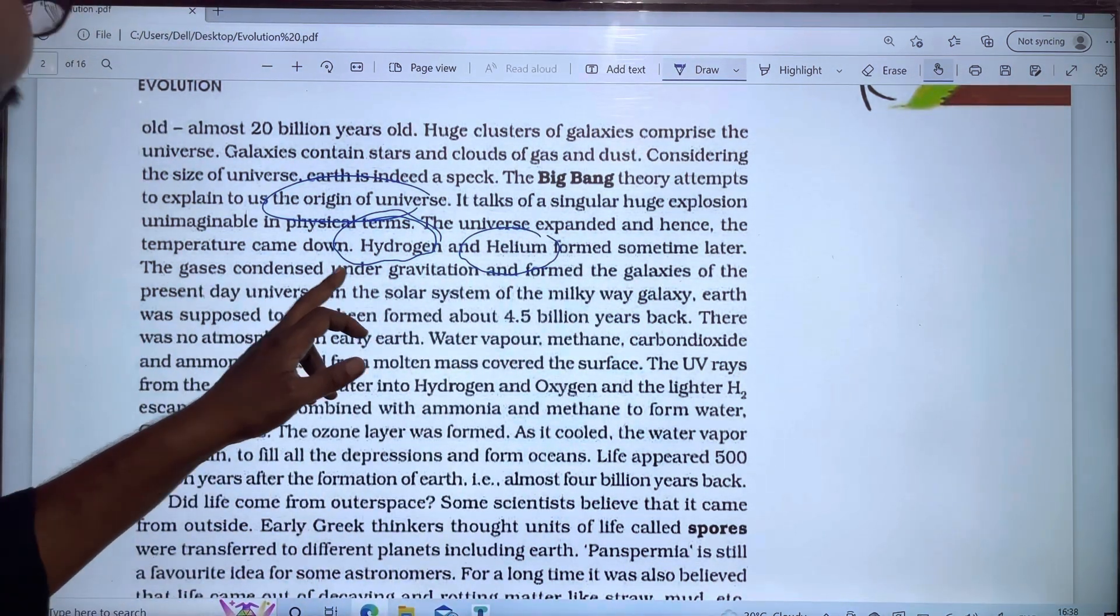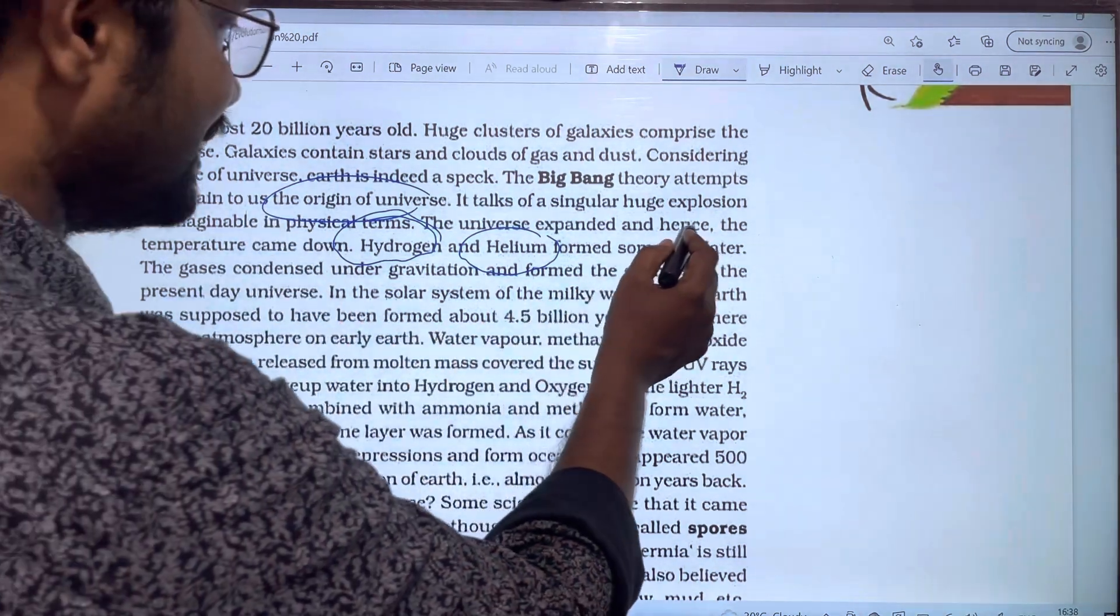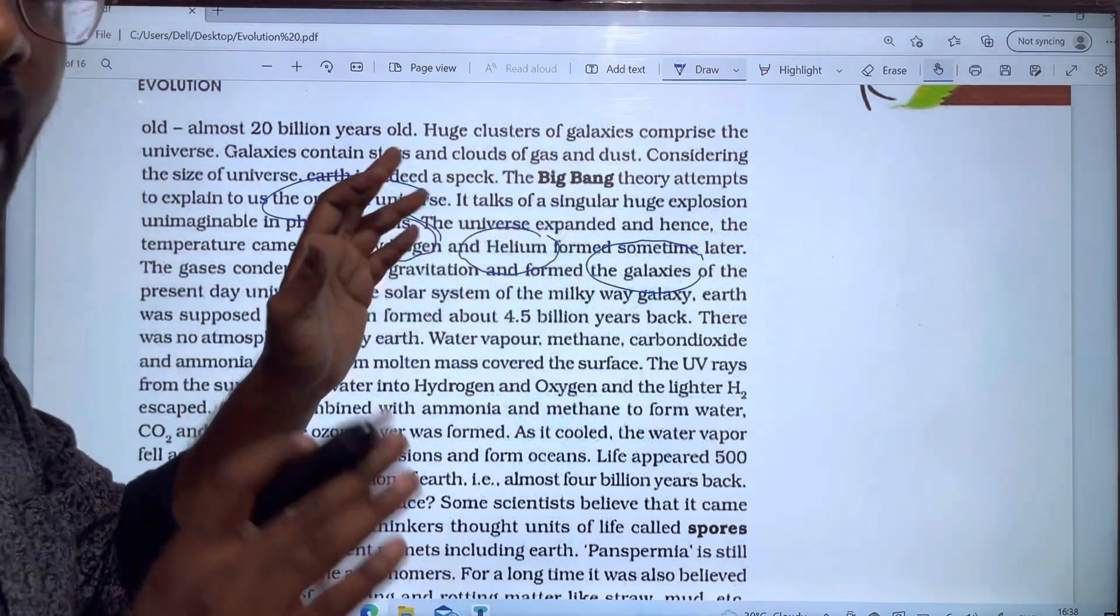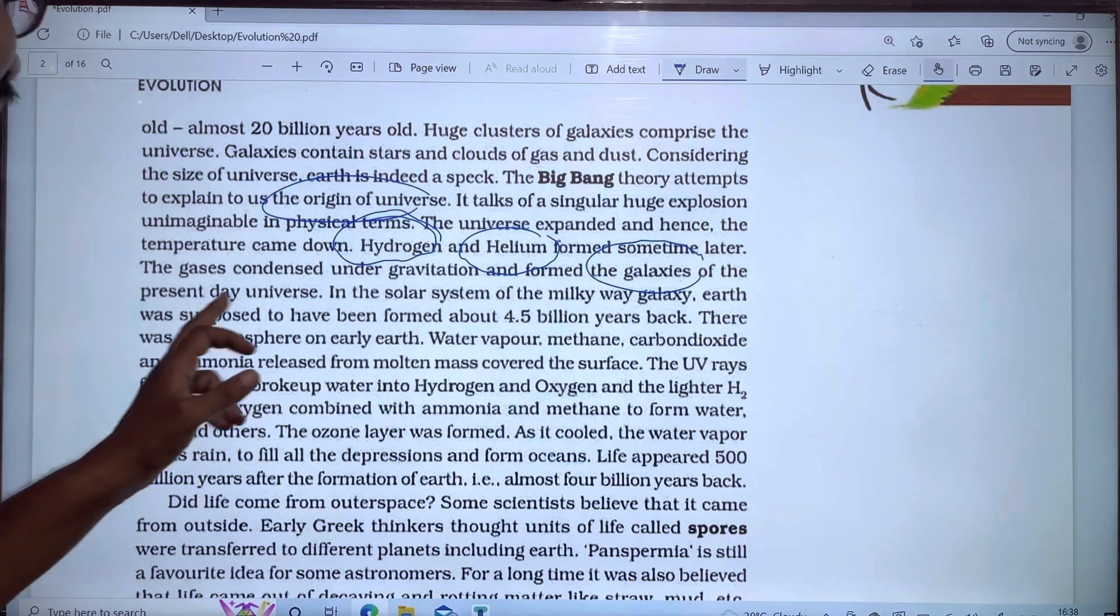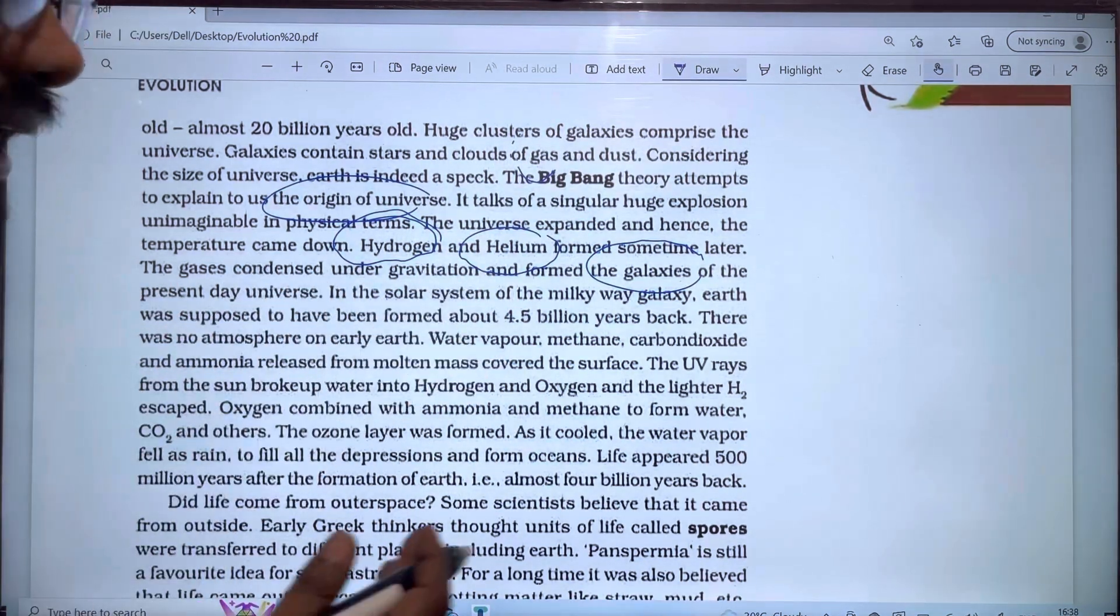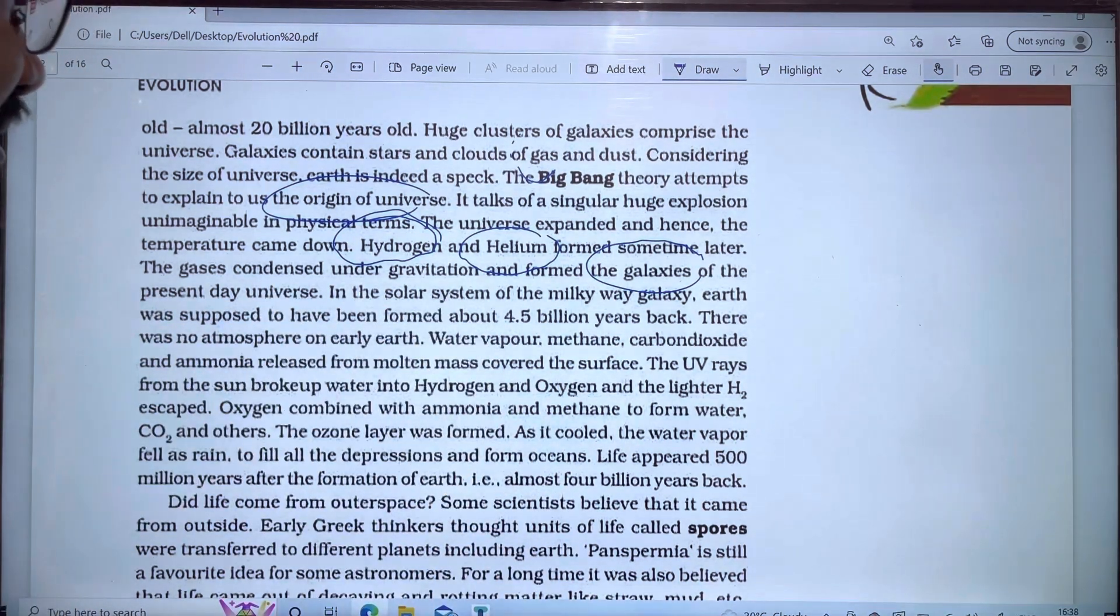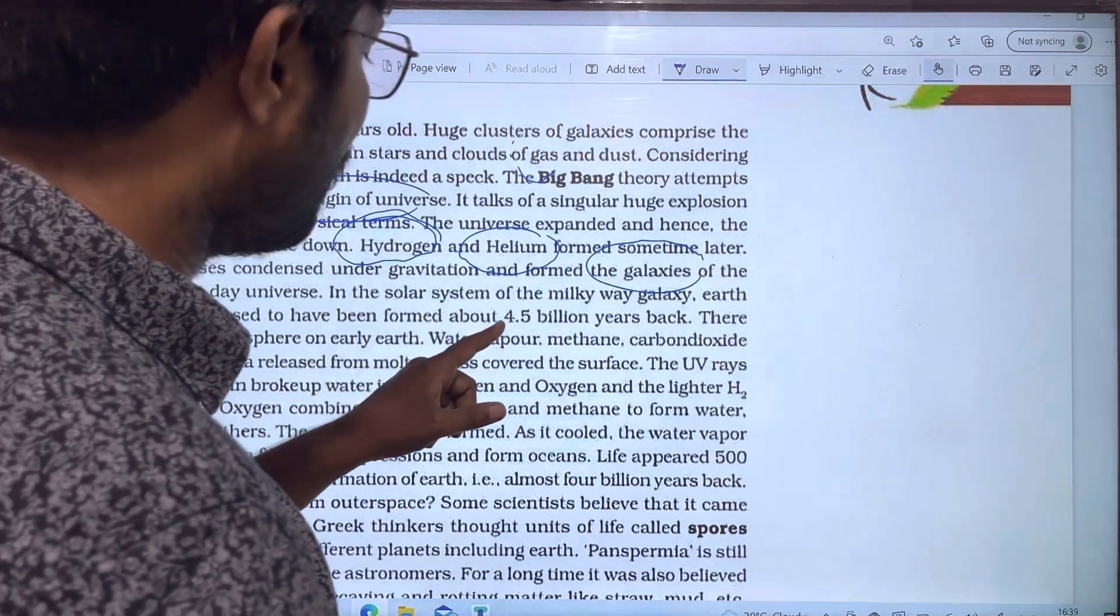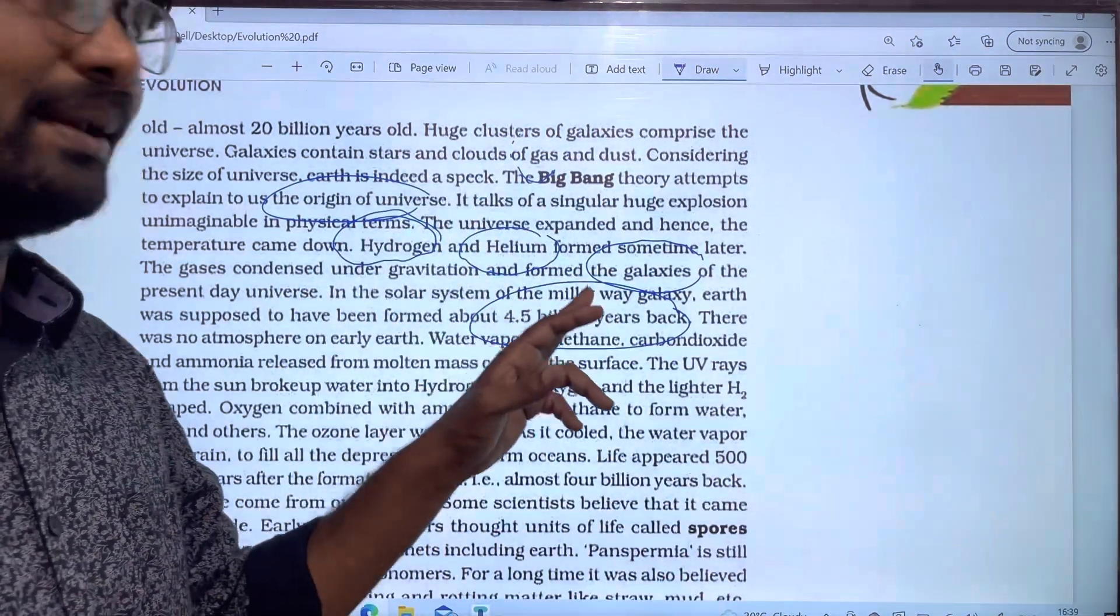The gas is condensed under gravitation and forms the galaxies of the present day universe. The galaxies form the stars of gas and dust. The dust of gas is condensed under gravitation and forms the galaxies. Earth was supposed to have been formed about 4.5 billion years back.